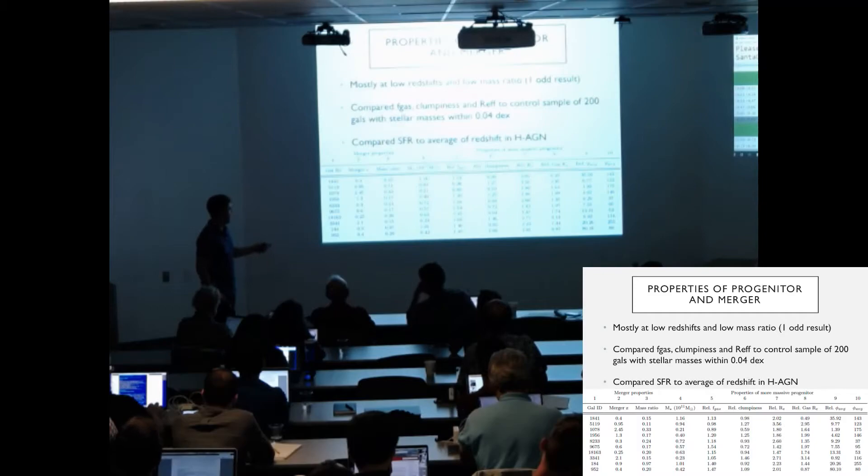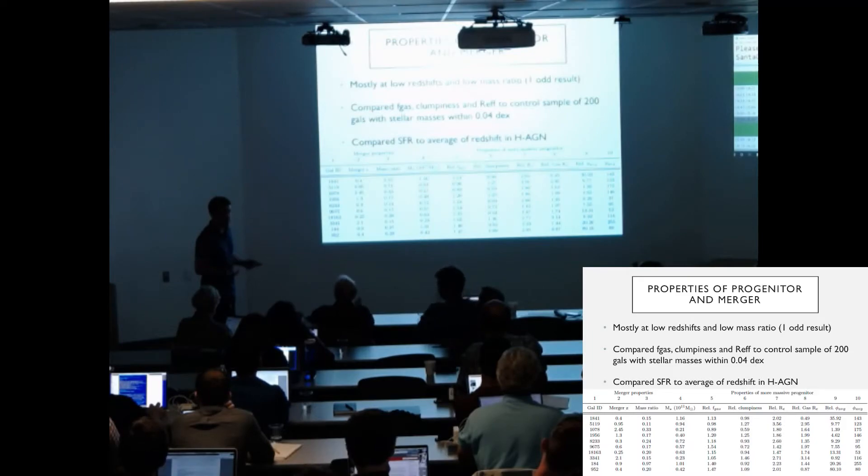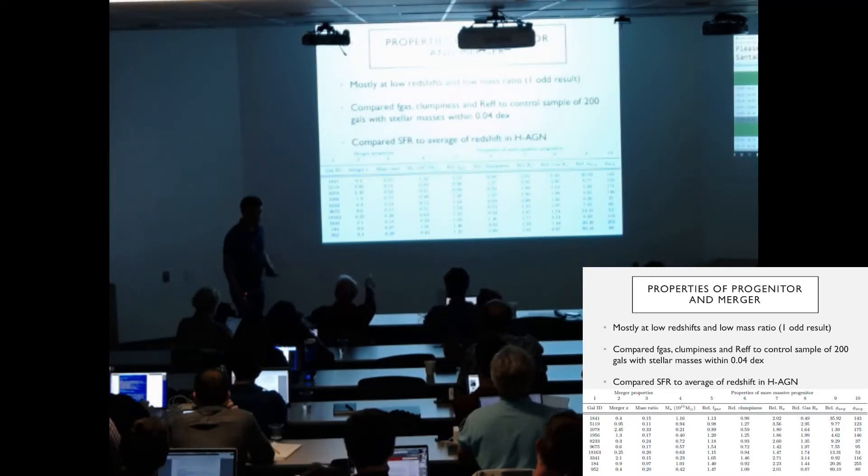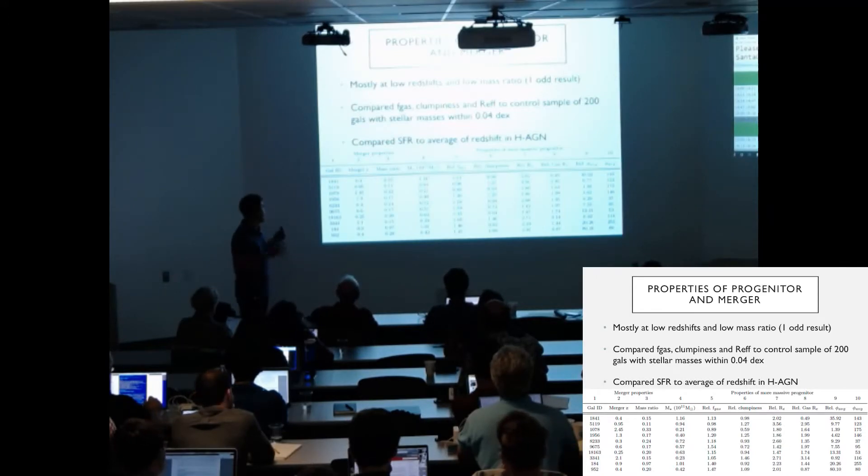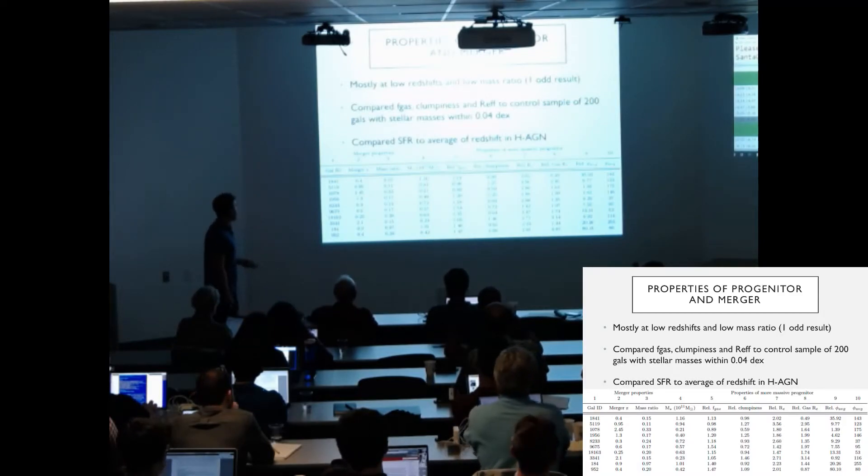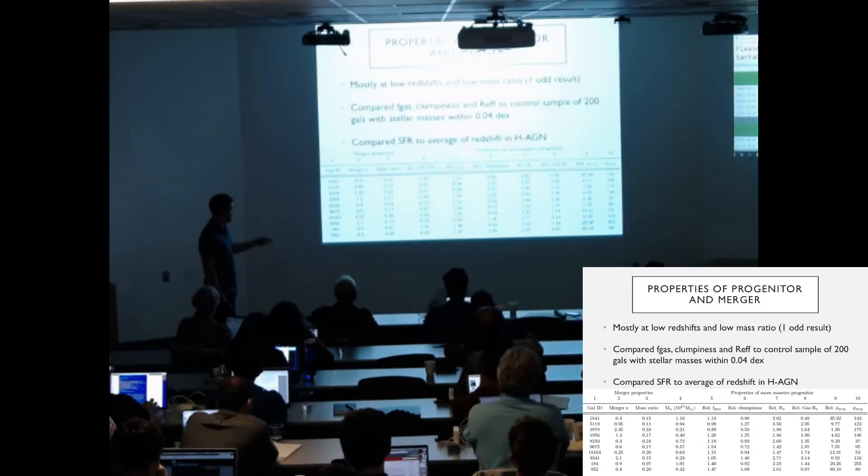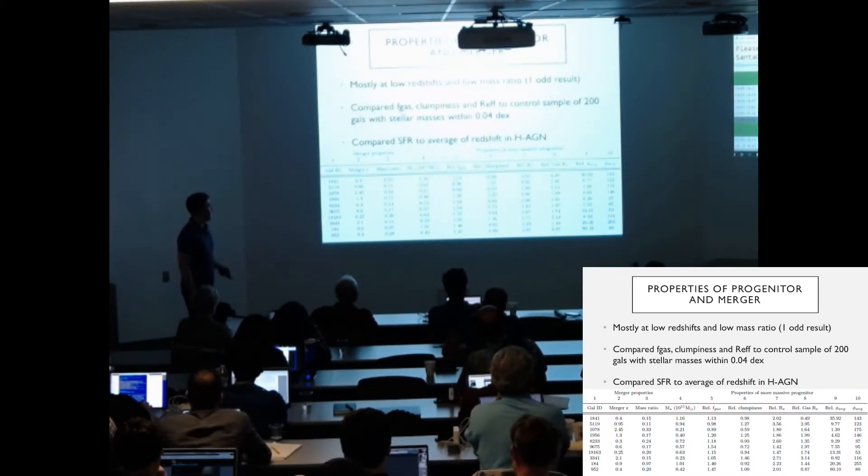So what this is is basically the relative gas fraction. So it's the gas fraction of a galaxy in our sample divided by the gas fraction of the average of the control sample. So one would be the same as the average of the control sample. So it's the same with the clumpiness. They are larger on average than the control sample and similar for the gas radius. We then did the relative star formation rates of these galaxies when they're undergoing the mergers and we can see that they have very enhanced star formation when the mergers taking place which might be a way to detect these observationally.